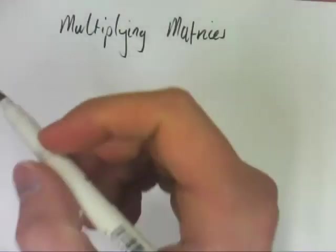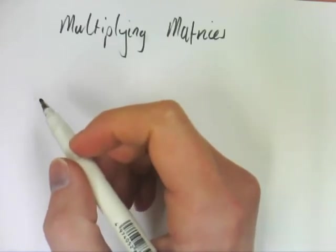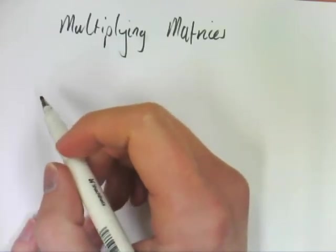When it comes to multiplying matrices together, you need to have, they don't have to be the same order, they can be the same order, but it's more important